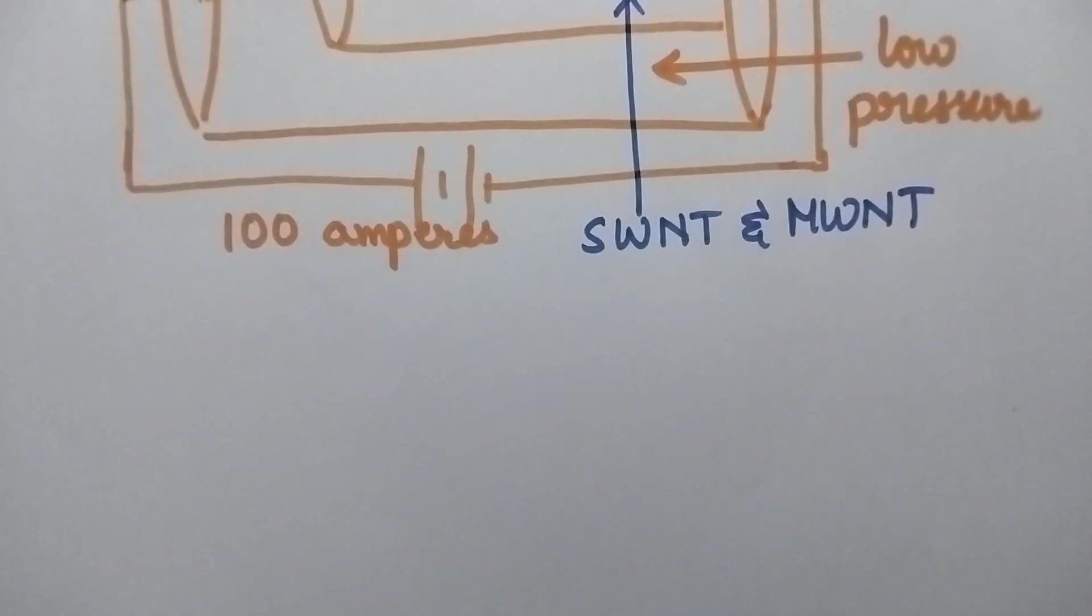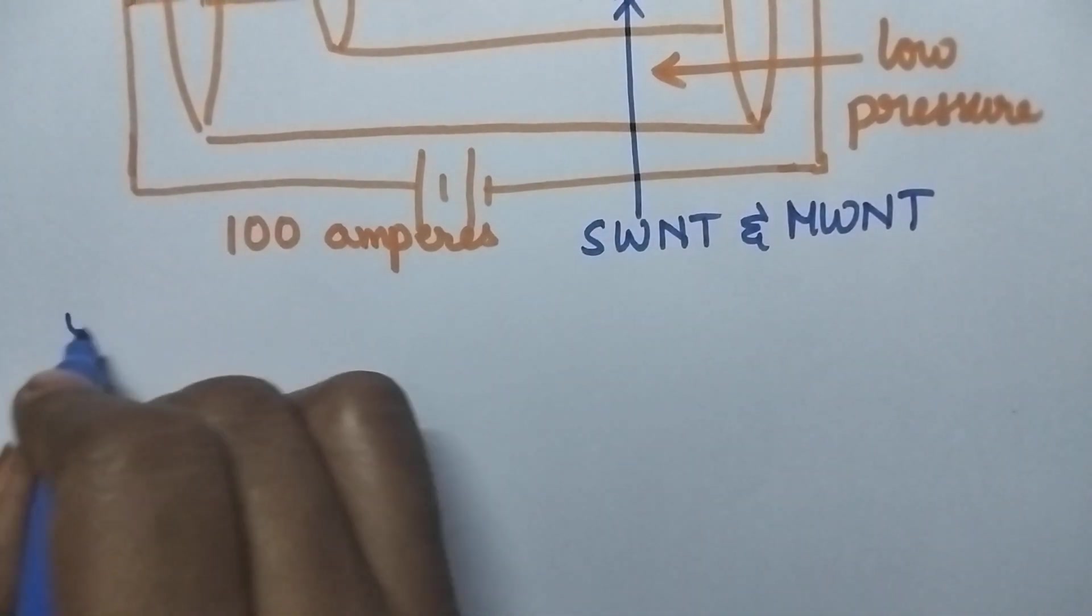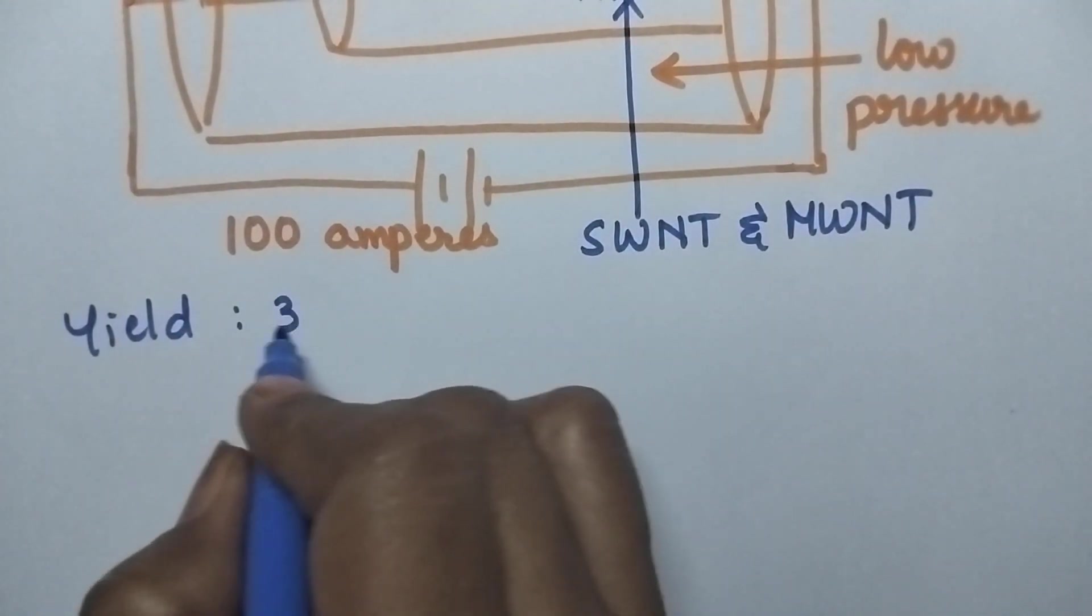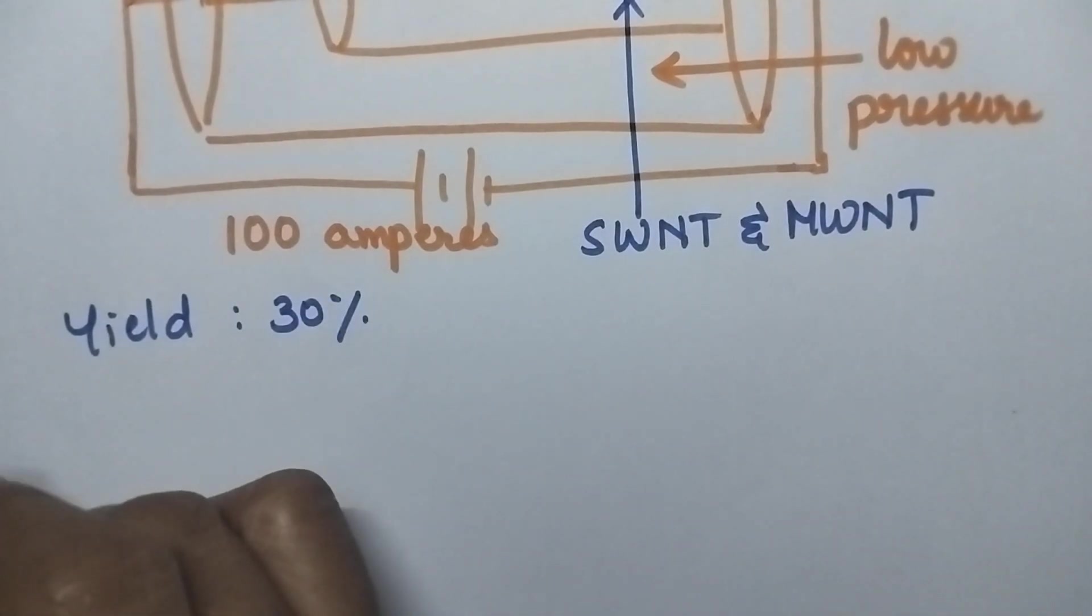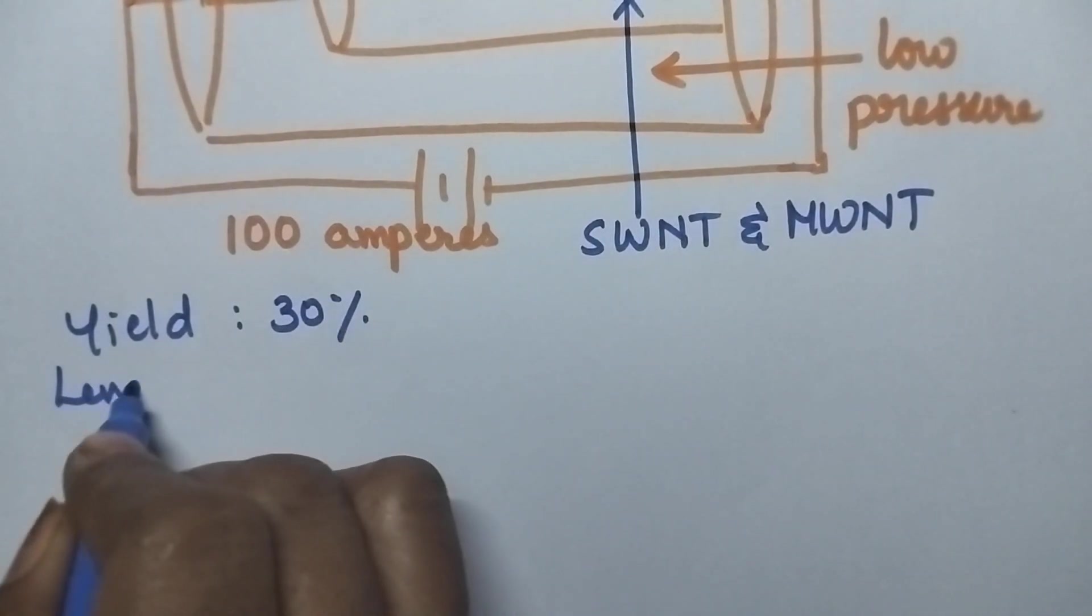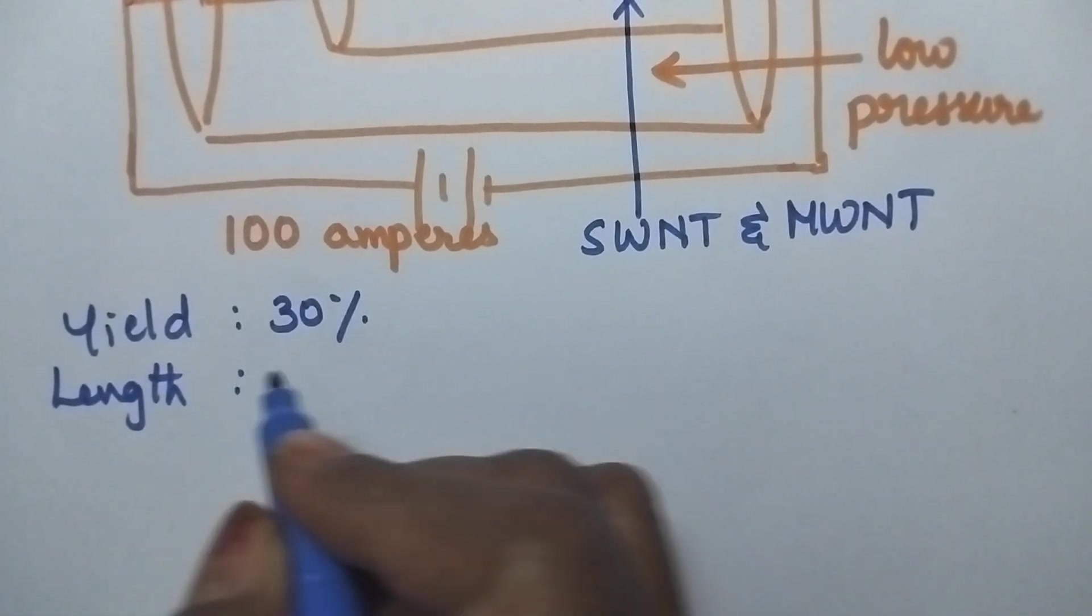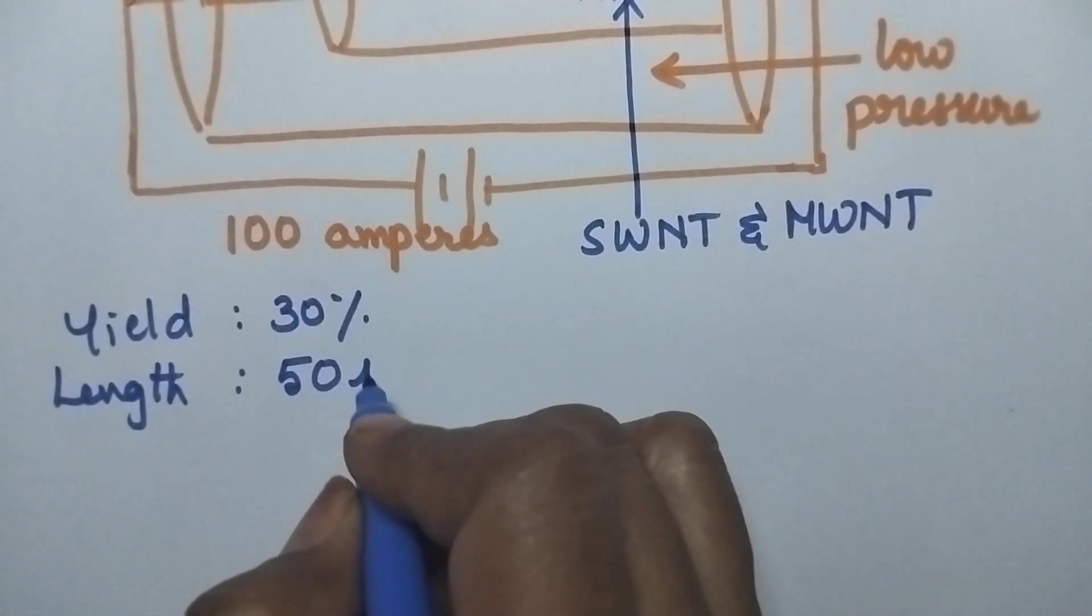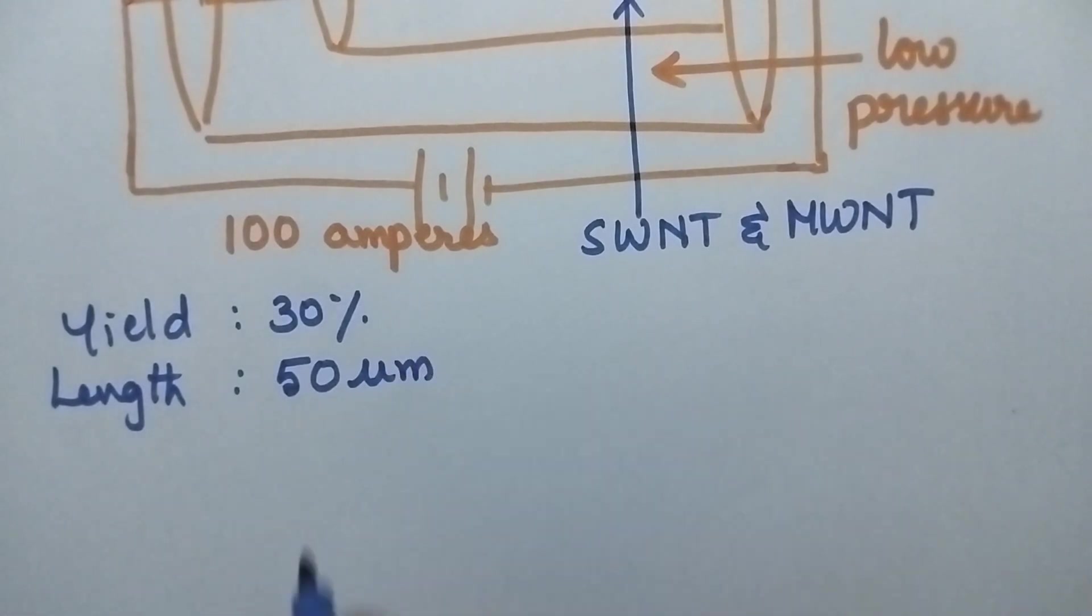The yield of the reaction is 30%, and the length of the carbon nanotubes is generally 50 micrometers. This is all about the arc discharge method.